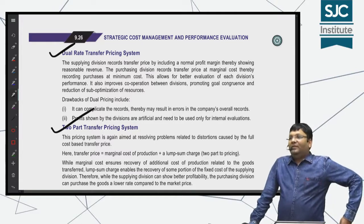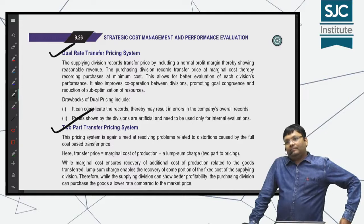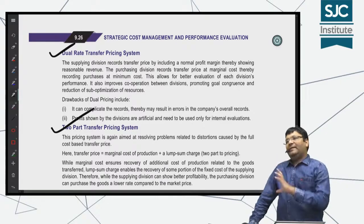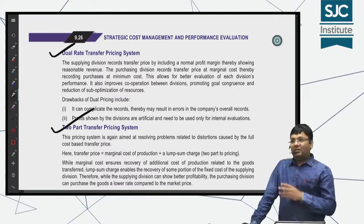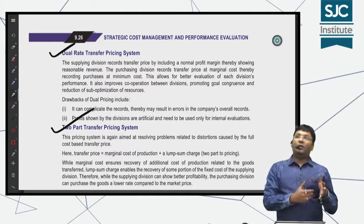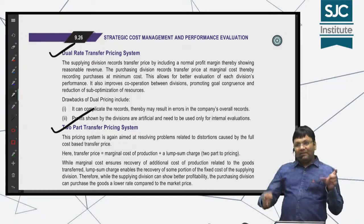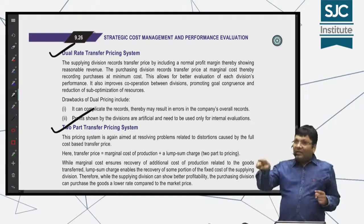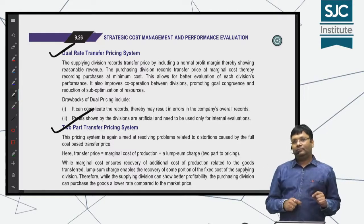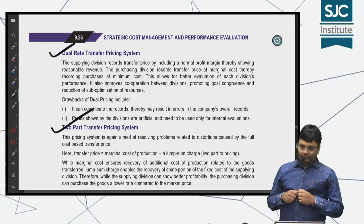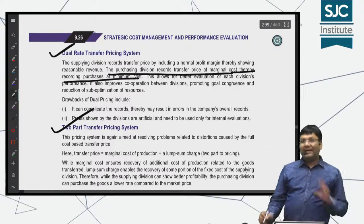In this system, the transferer records the transfer at cost plus profit — that is, cost plus profit is recorded in the transferer's books. But when sending goods to the transferee, the transferer also communicates the actual cost. So when the transferee records it as a purchase, they do not record it at the transferer's invoice value but at the transferer's cost. That is Dual Rate Transfer Pricing. The purchasing division records the transfer price at marginal cost — recording purchases at minimum cost.